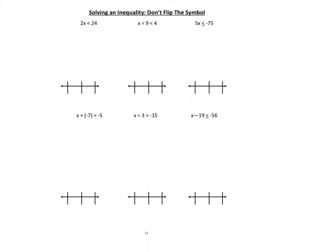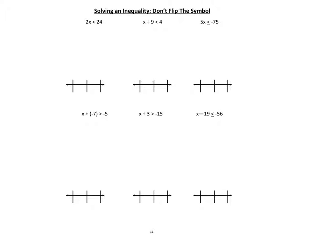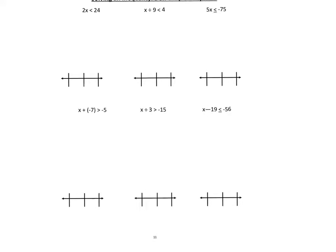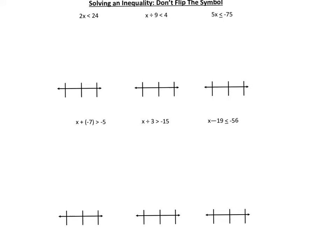The first six examples are ones where we are not required to flip the symbol. You'll also notice I've only given you very small number lines because we don't need to make super large extravagant ones. Looking at the first one, 2x is less than 24. To solve this, we divide both sides by 2 because division is the inverse of multiplication, and we get that x is less than 12.